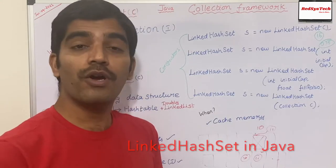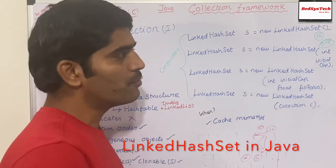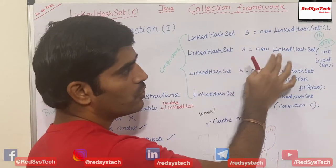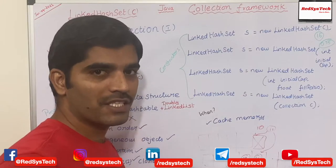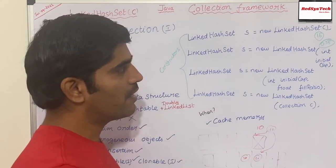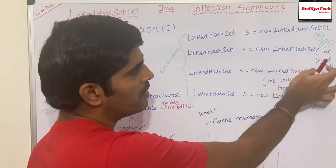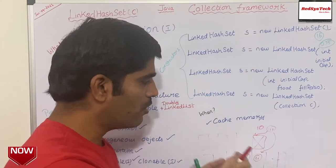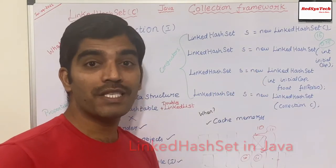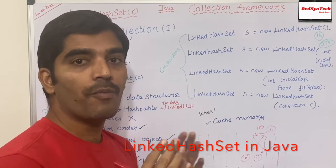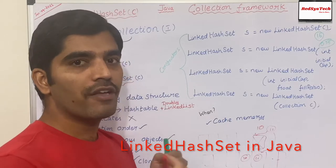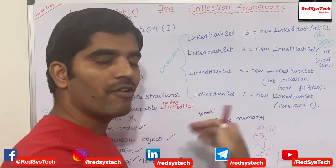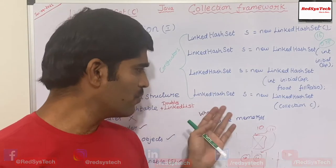The next way is LinkedHashSet = new LinkedHashSet(initialCapacity). If you don't want to go with 16, let's say you want 1000 as the initial capacity, you can define it. The third way is you can define both initial capacity and fill ratio — for example, if you want a new object created only when 90% of memory is occupied, you can pass 0.90. The fourth way is LinkedHashSet = new LinkedHashSet(collection), meaning if you want to convert from any other collection to LinkedHashSet, you can use this constructor.